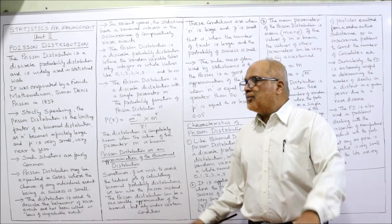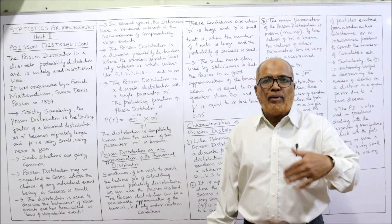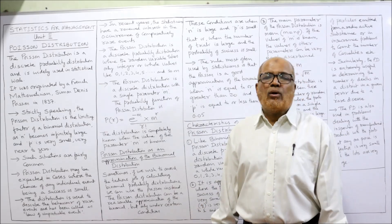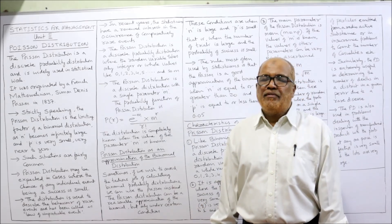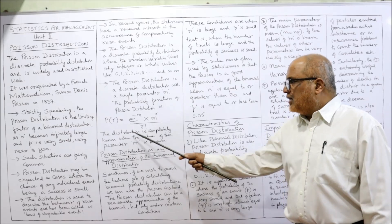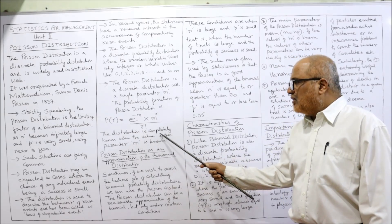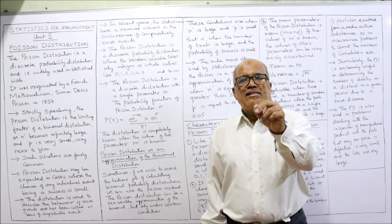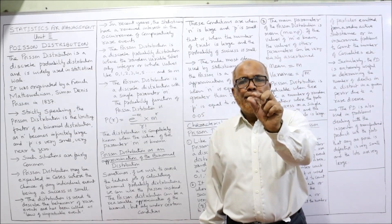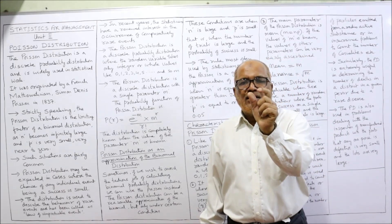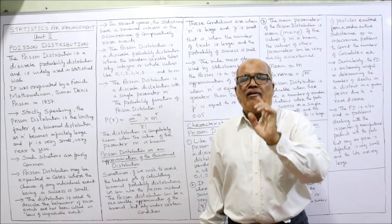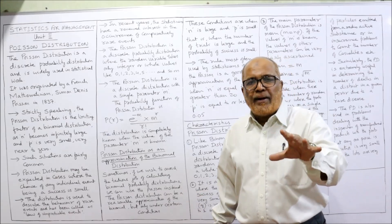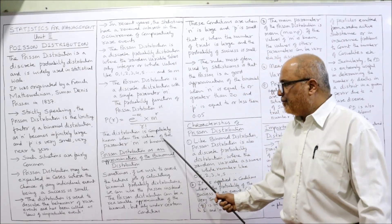The distribution is completely known when the value of parameter m is known. Single parameter m is there. Once you calculate the value of m, we can find out P(r). The whole Poisson distribution depends on one parameter, that is m. Poisson distribution has an approximation of the binomial distribution — actually for the same problem we can apply either binomial or Poisson. But under certain circumstances the binomial distribution becomes difficult to calculate, and in that case Poisson distribution comes to the rescue.